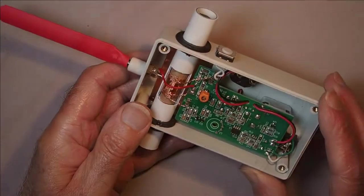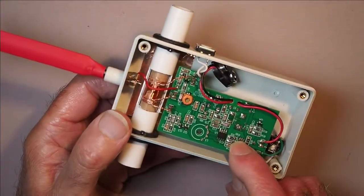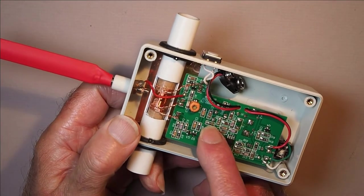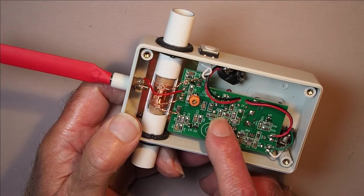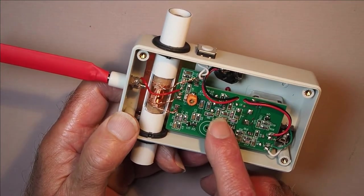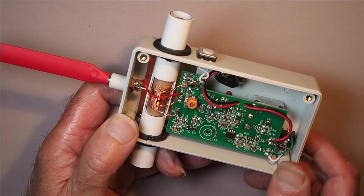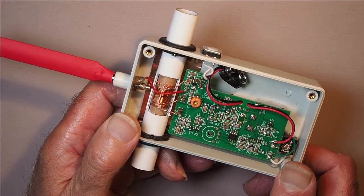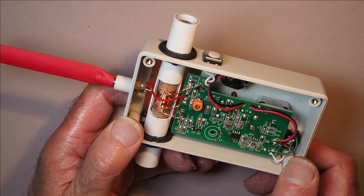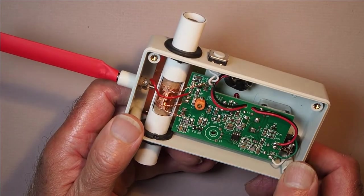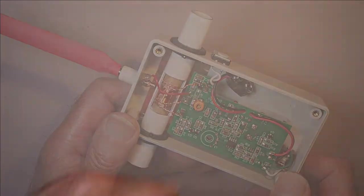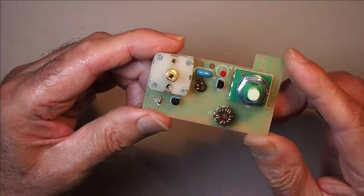Okay, now the surface mounted components here are generally 1206 format, but the pad spacing is such that you can get away with using 0805 components if you've got any of those. Now there are a couple of TO92 devices on the board.